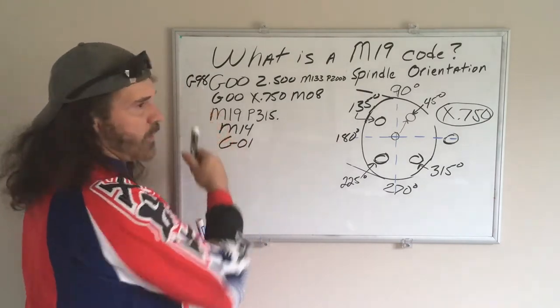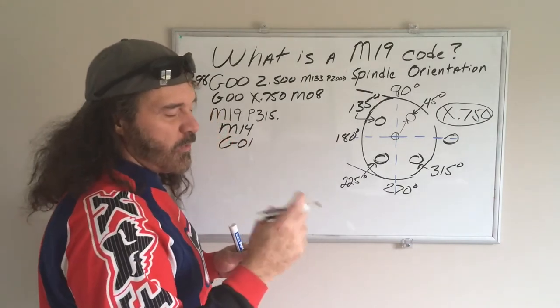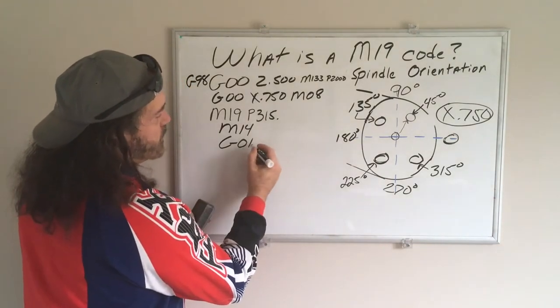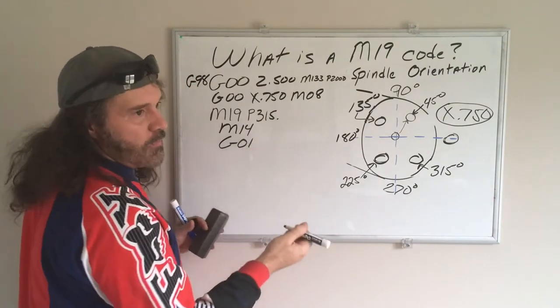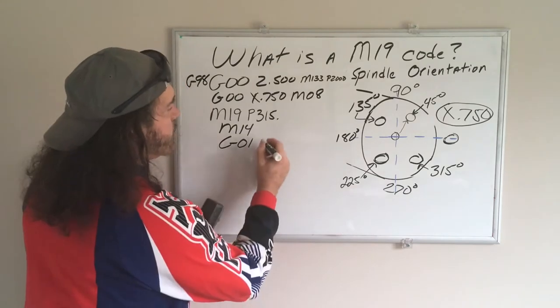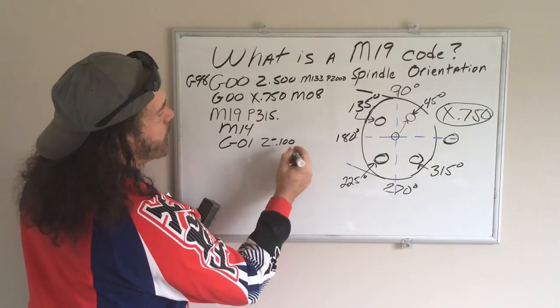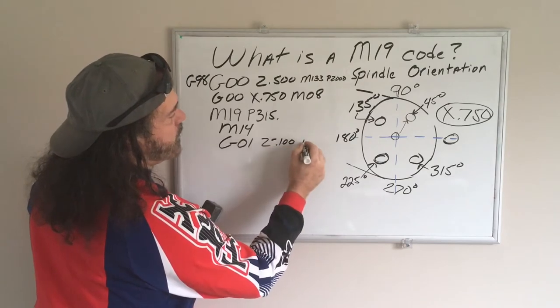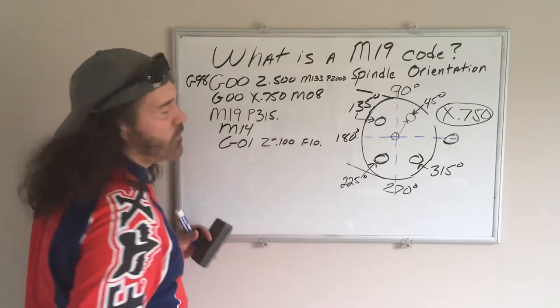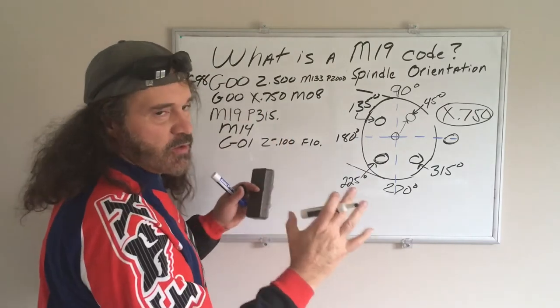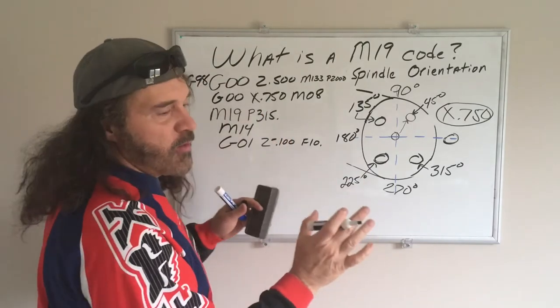So we'll say G01, I just want to go a hundred thousandths, so we'll say Z-0.100 at a feed rate of 10, that's whatever. I started at a safe distance just to make sure everything was okay. You could have rapid closer, but for this example it's fine.